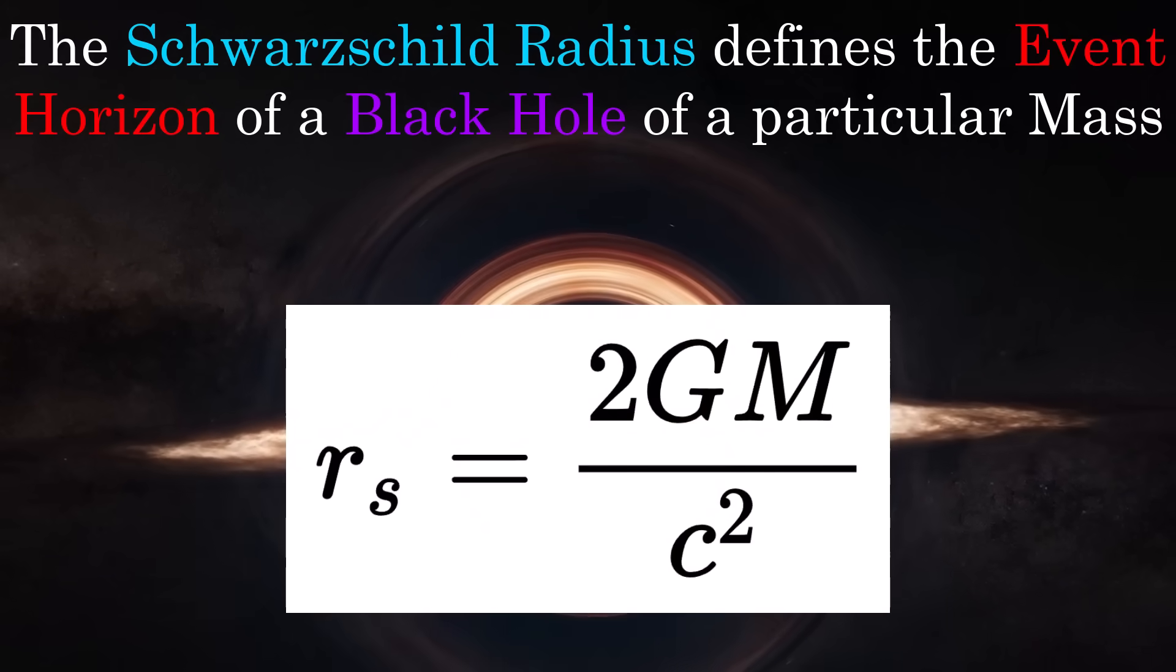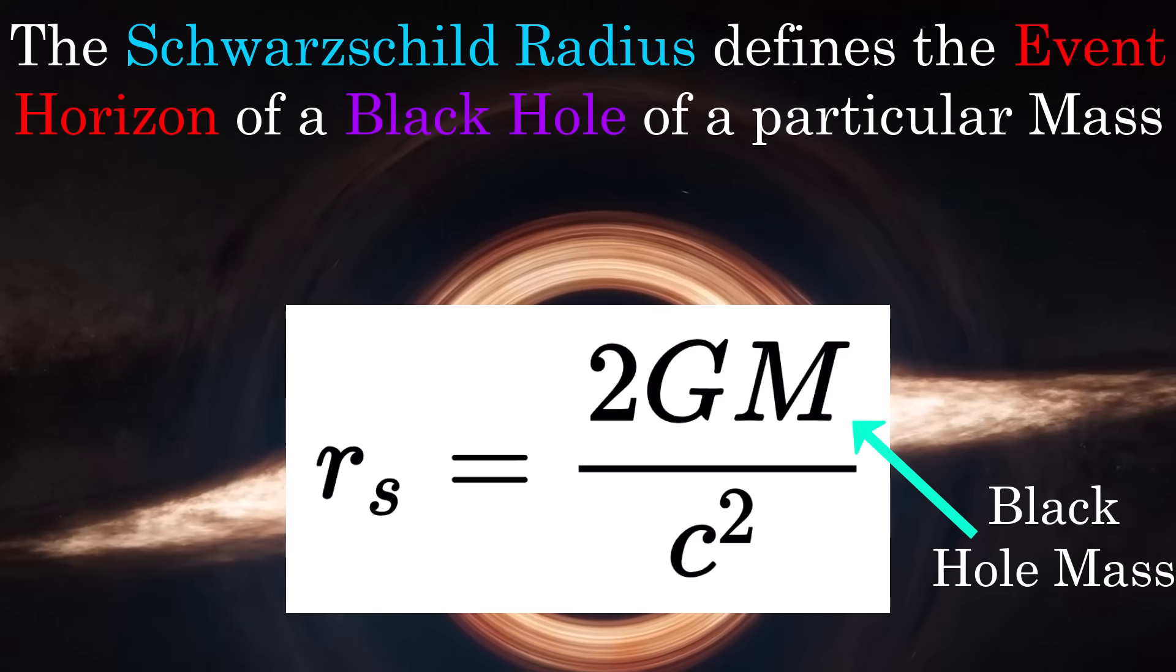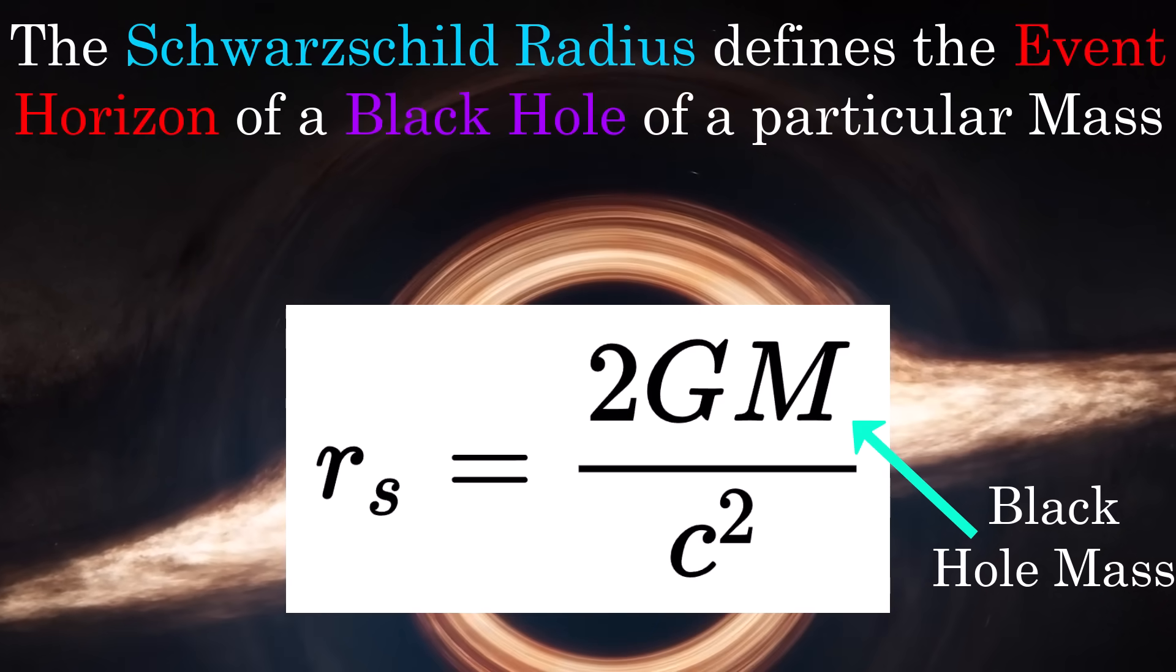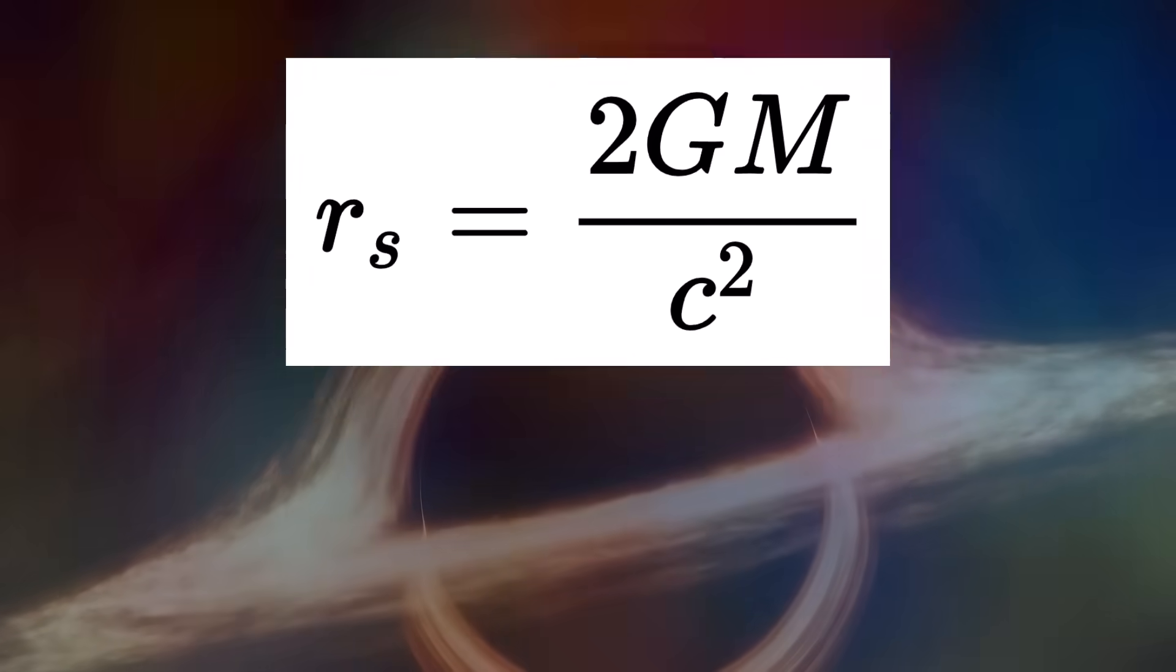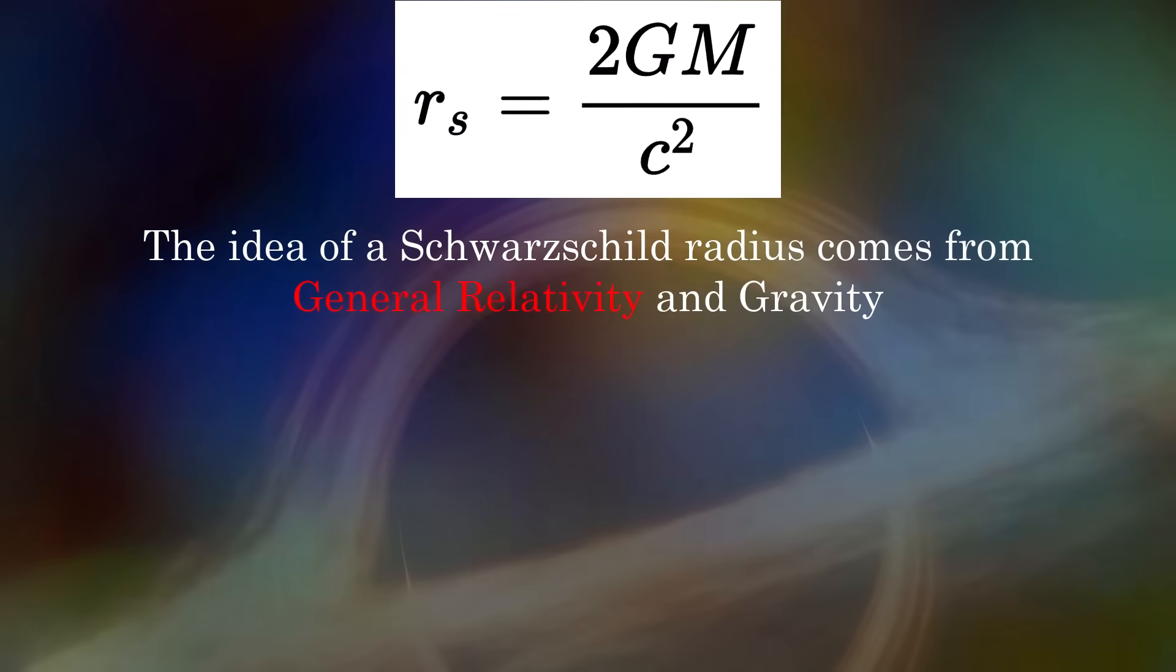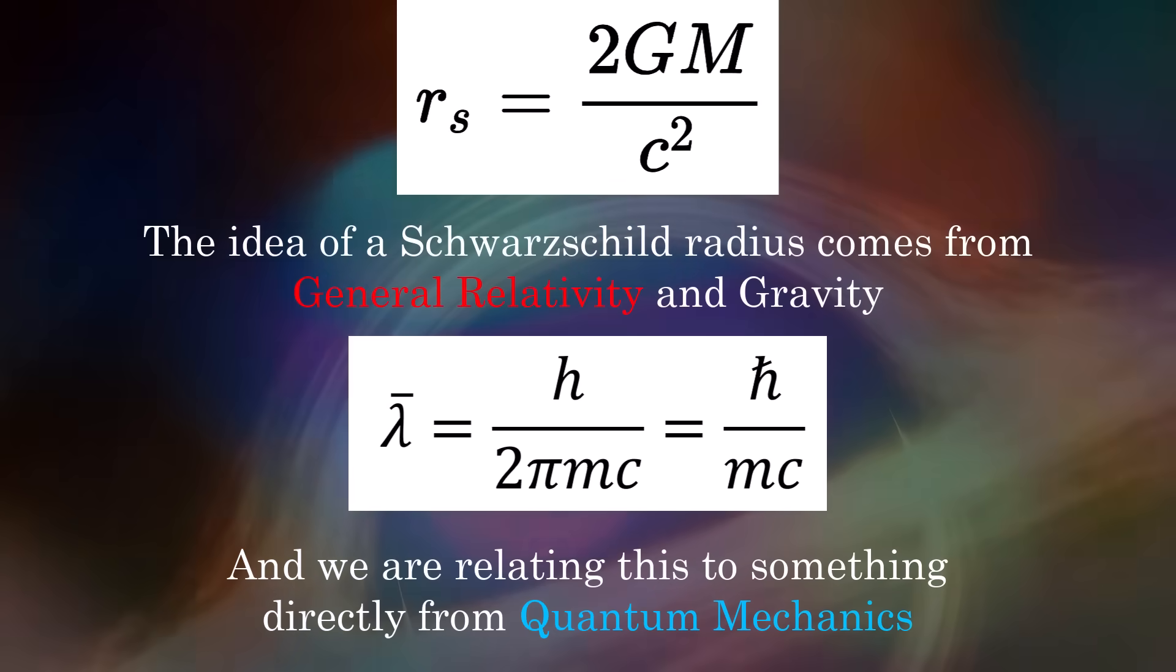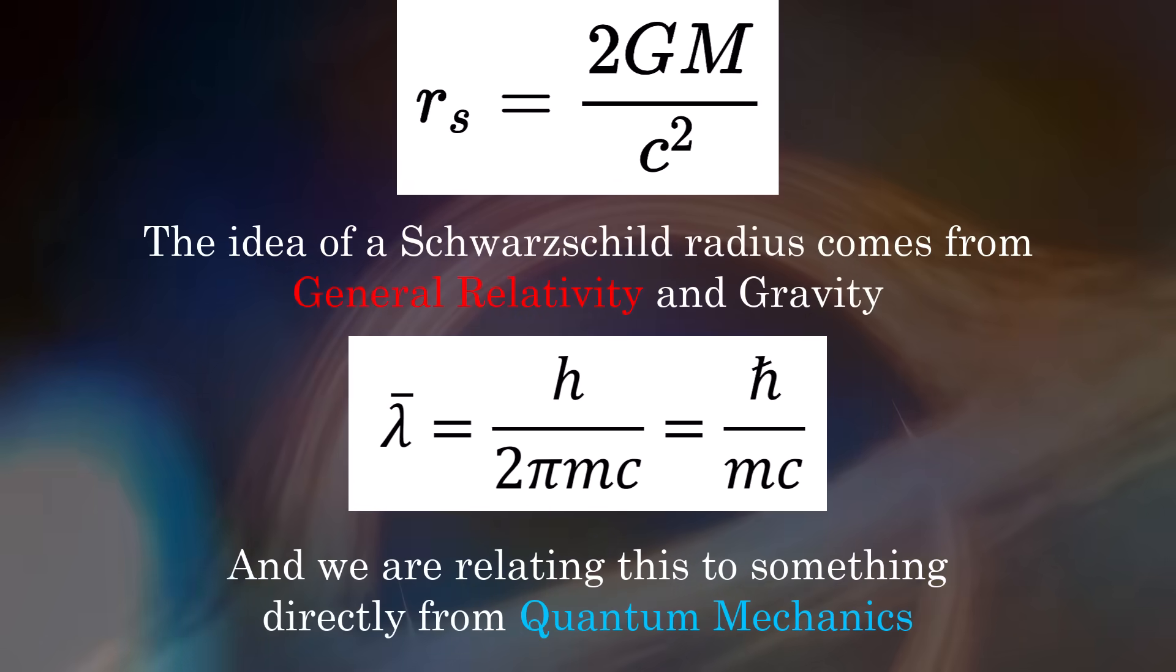It can be found by setting the escape velocity to c, the speed of light, and evaluating the distance from the centre of the object. The key point is that the Schwarzschild radius relates heavily to gravity, spacetime and general relativity, whereas the Compton wavelength is purely quantum mechanical and relates to the wave-particle duality of matter on small scales.